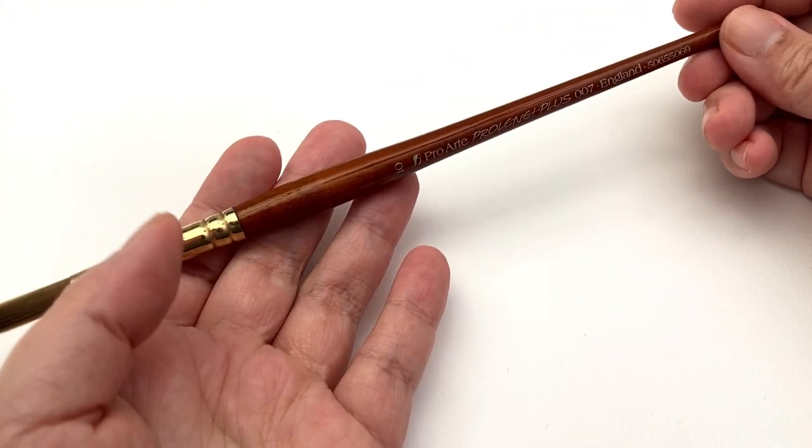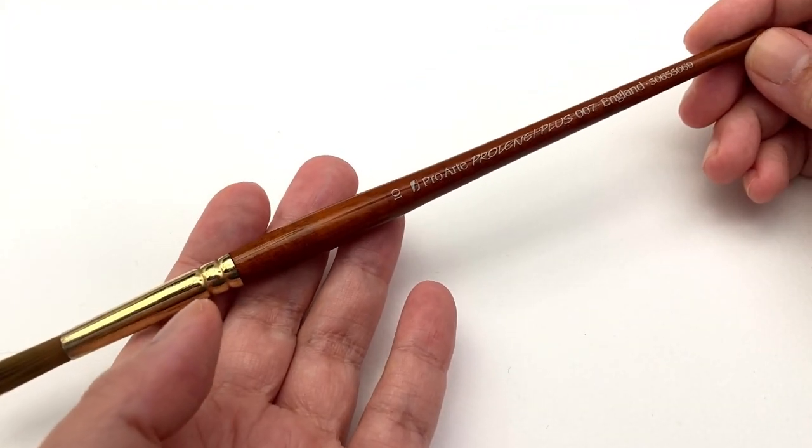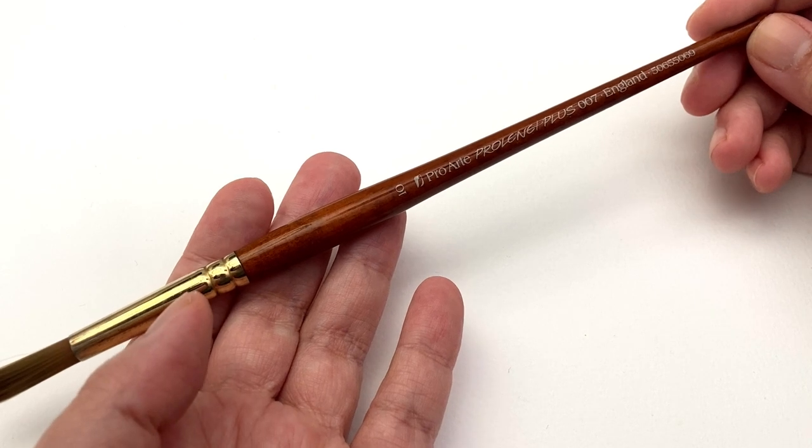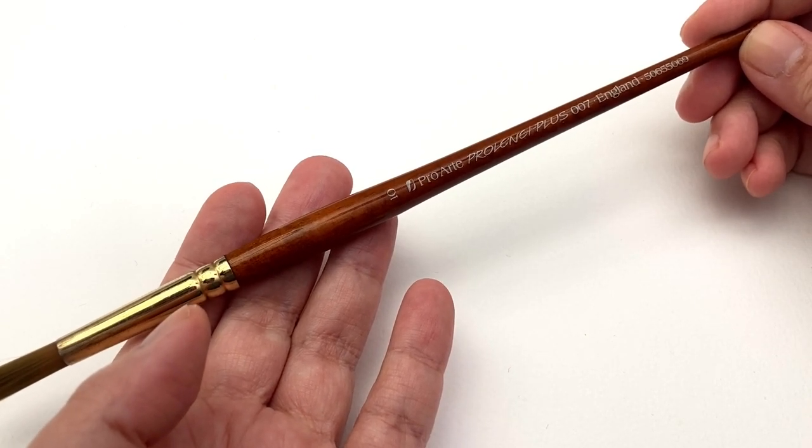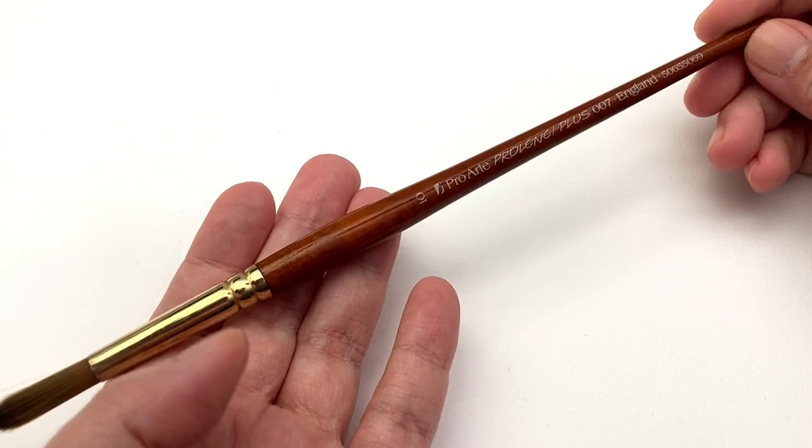In the second episode of this brush testing series, we're going to be taking a look at the ProArt ProLimp Plus 007 size 10 in the round.